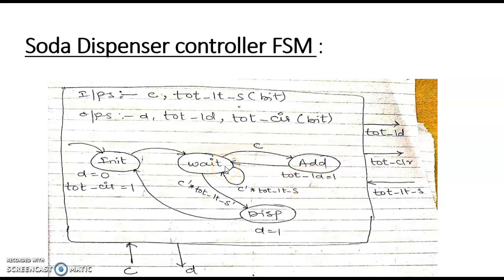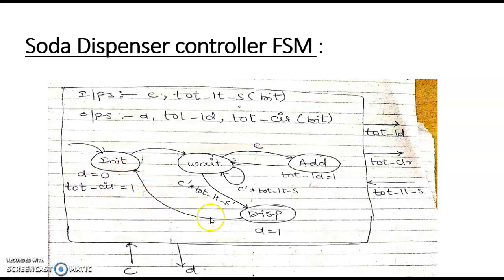After coming back to the wait state, it will check whether a coin is there. If a coin is present, it will go into the add state again. If coin is not there, it will check two conditions: whether TOT_LTS is 1 or 0. If it is 1, the coin value is less than S, so it waits for more coins. If it is 0, the TOT value is greater than S and the soda can be dispensed — it enters the dispense state, making D equal to 1. Then it returns to the initial state, making D equal to 0 and TOT_clear equal to 1.